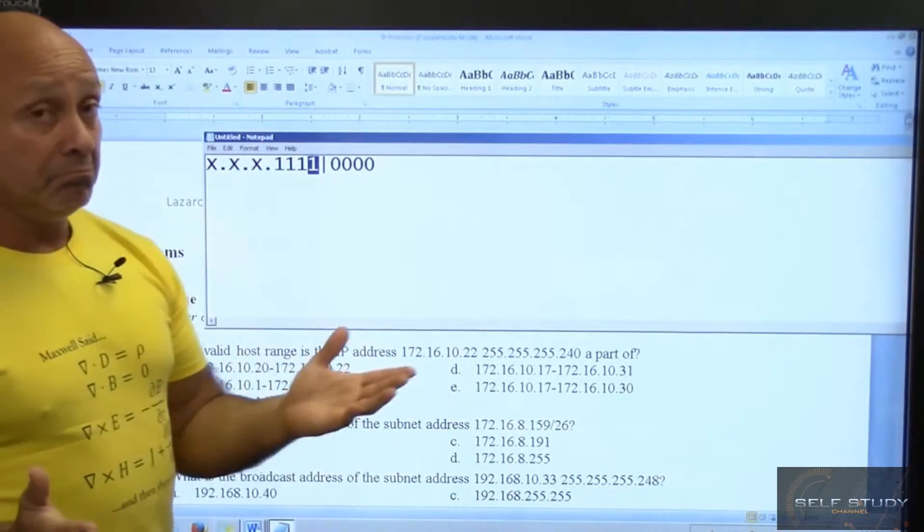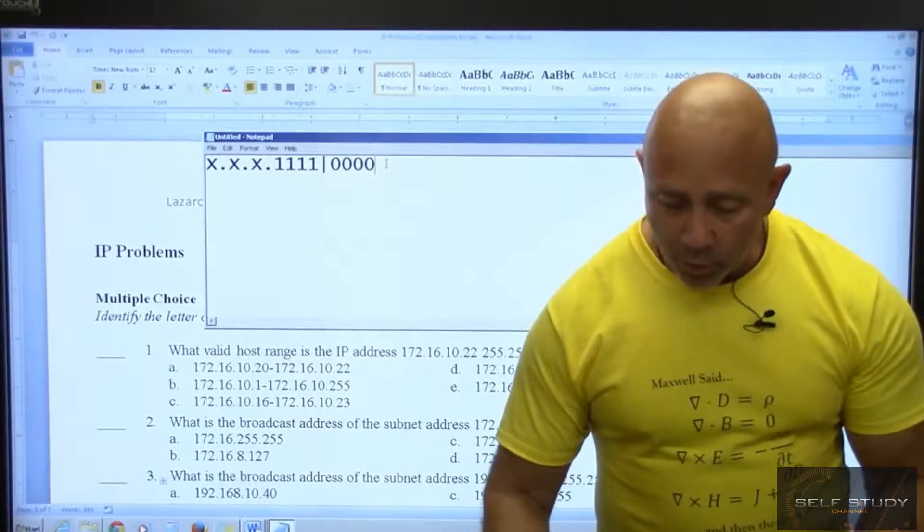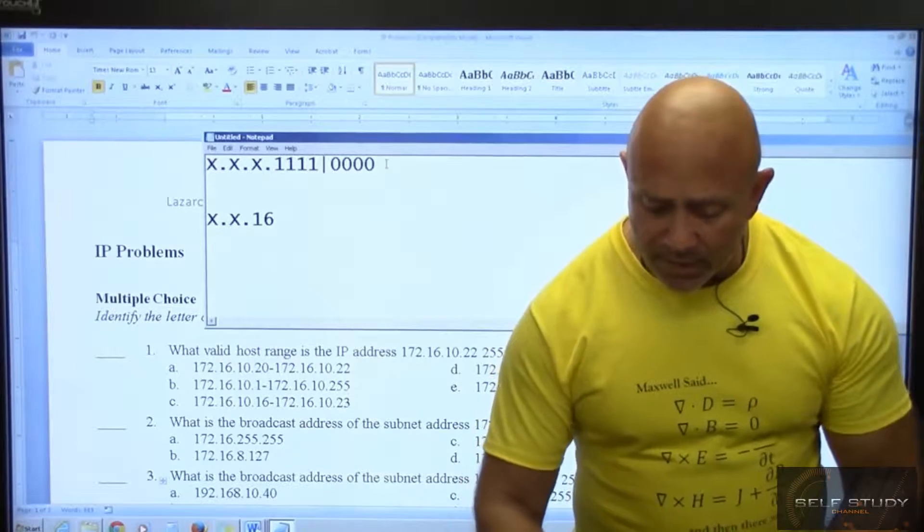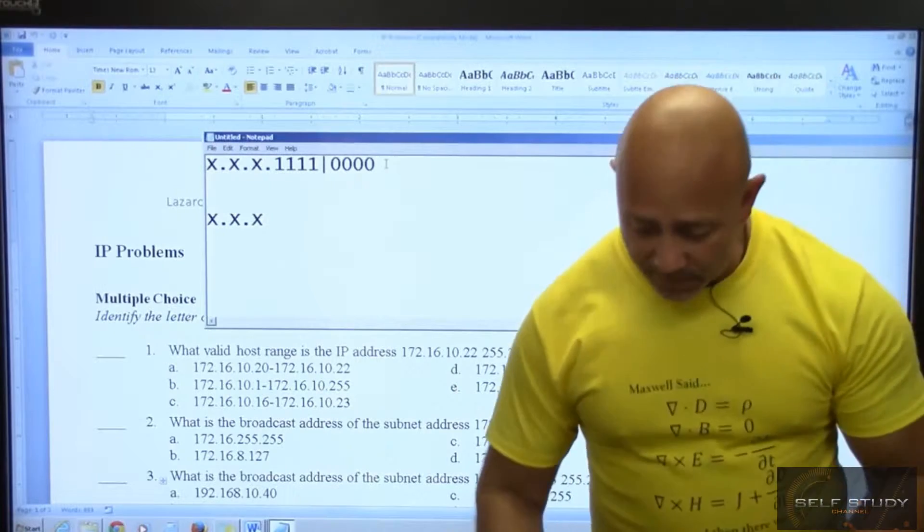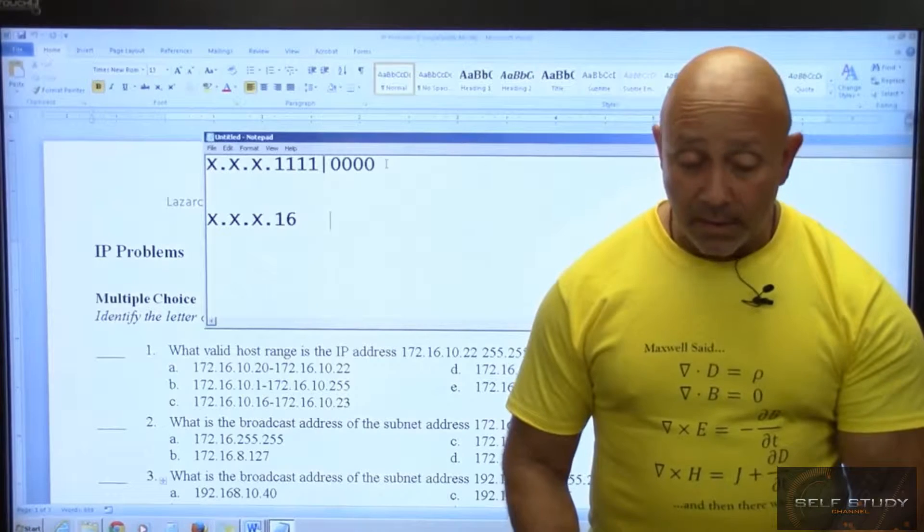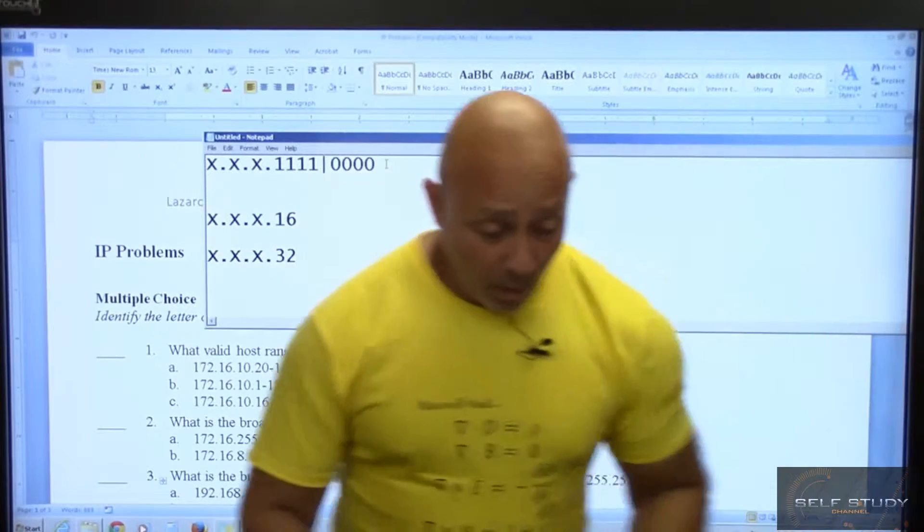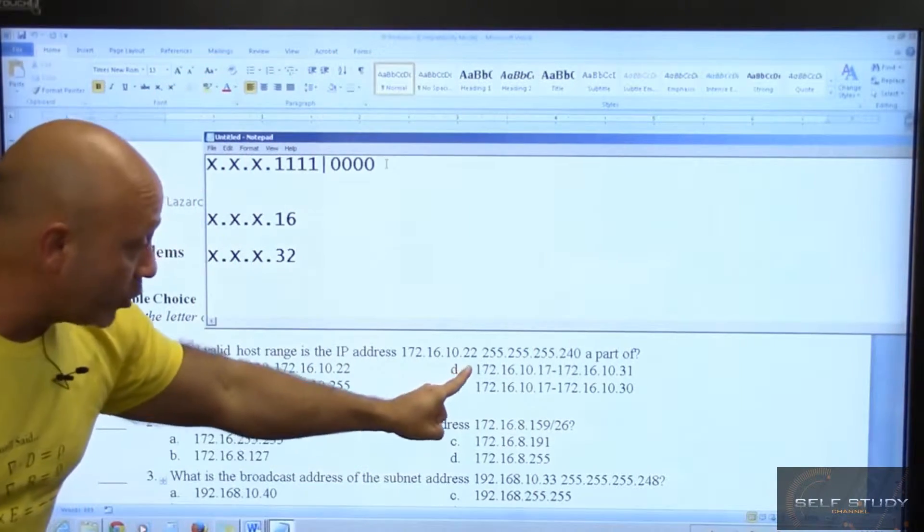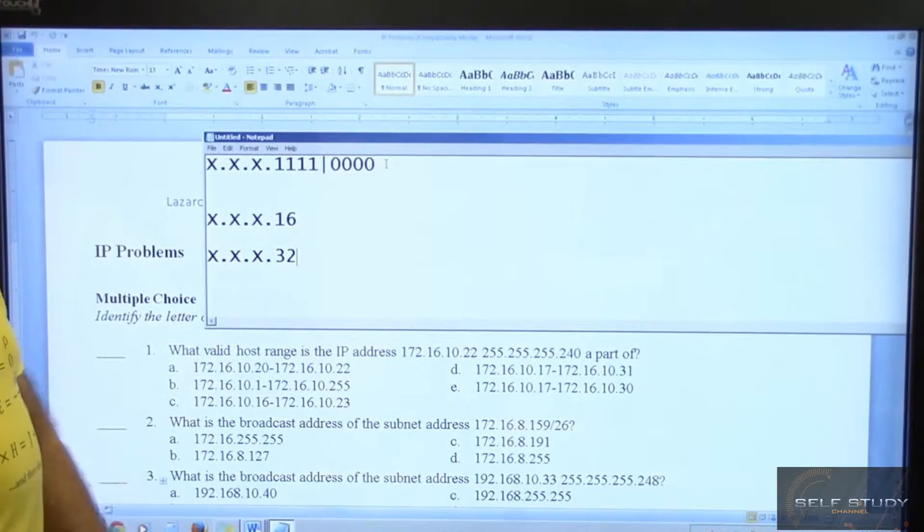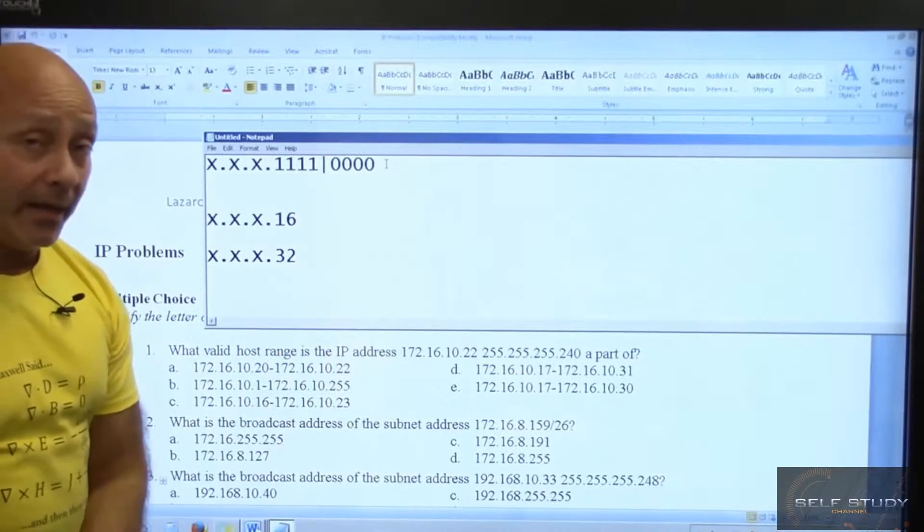So how many times do we need to increment by 16 to get to 22 in the last octet? I know that's only going to be once, but let's see how you would do that. So you would say X.X.X.16 in the last octet. And then if I increment again, it's X.X.X.32. Well the number I'm looking for is 22 which is in the last octet, so I know it's not going to be in the 32 network, it's going to be in the 16 network.